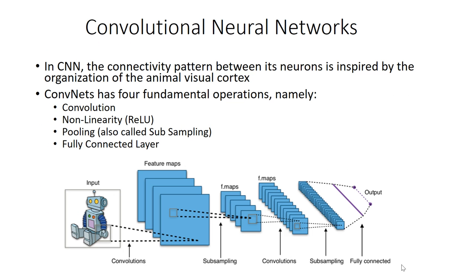Now let's first look into the model which we are going to use. We are going to use convolutional neural networks. Convolutional neural networks are very different from traditional feed-forward networks, though CNNs are also feed-forward networks. But the connectivity pattern in CNN between its neurons is inspired by the organization of the animal visual cortex. This means it has four fundamental operations, which are namely convolution, non-linearity layer, pooling, and fully connected layers.